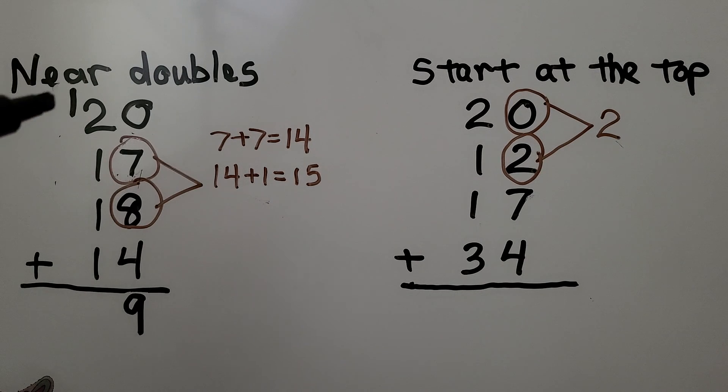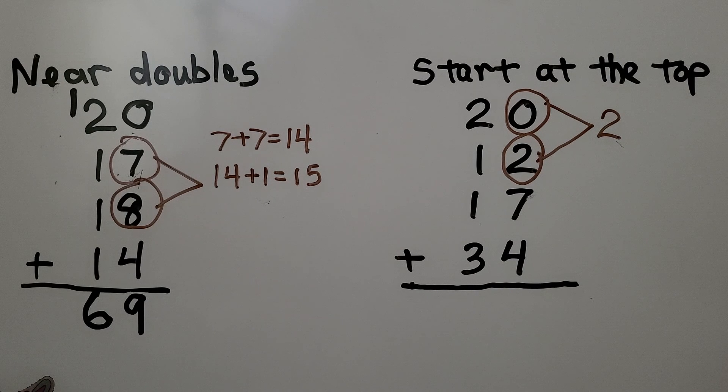19 is 1 ten and 9 ones. We regroup the 10. Now we add the tens column. 2, 3, 4, 5, 6. We have 6 tens, 9 ones. It's equal to 69.